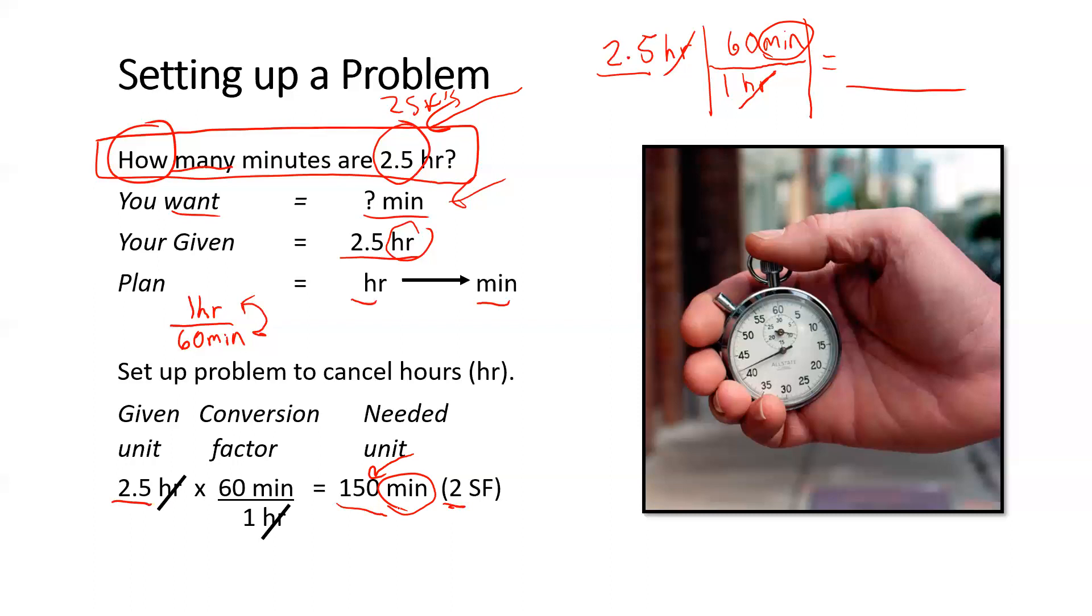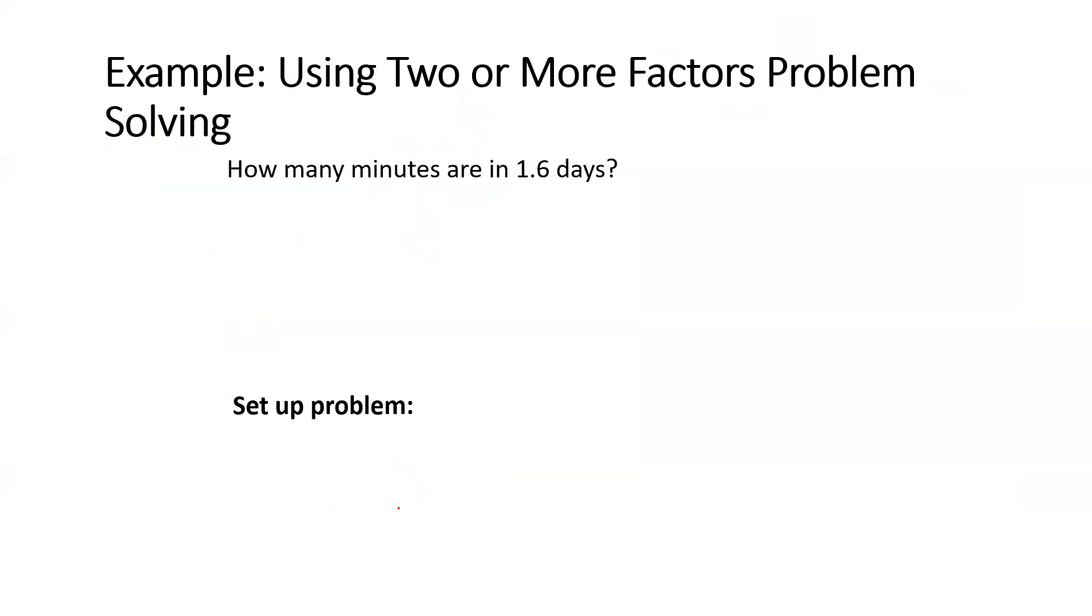Let's bump this up a little bit. How many minutes are in 1.6 days? So again, what do I want? I want a unit of time and I want it in minutes. What am I given? I'm given 1.6 days. I could try to figure out a path. What's my path? Well I can go from days to hours. How can I do that? I know in one day there's 24 hours in one day. And I'm going to put the day on the denominator to make sure that those units cancel.